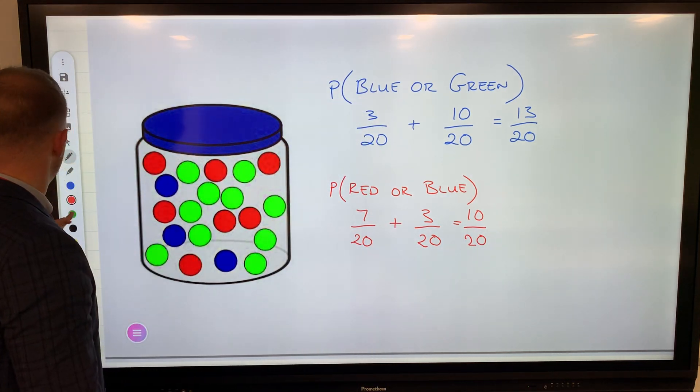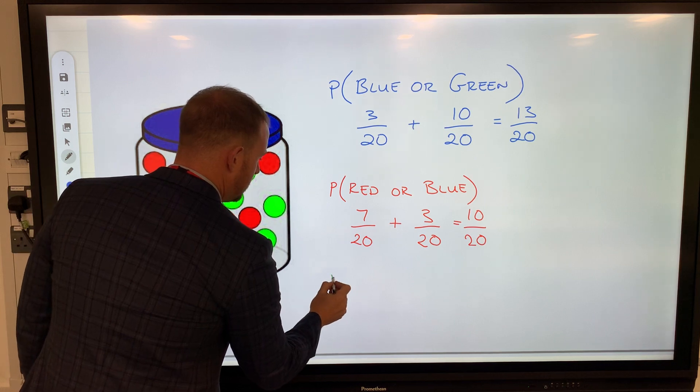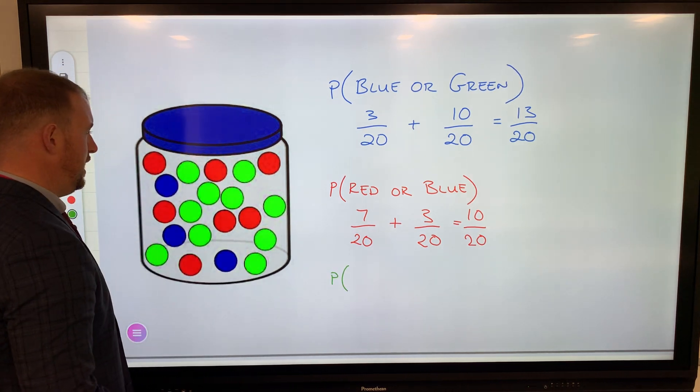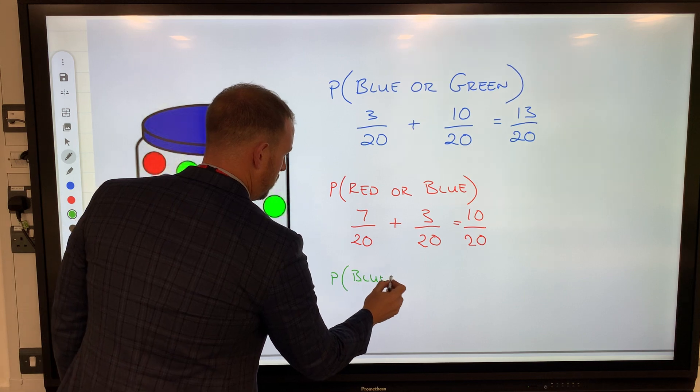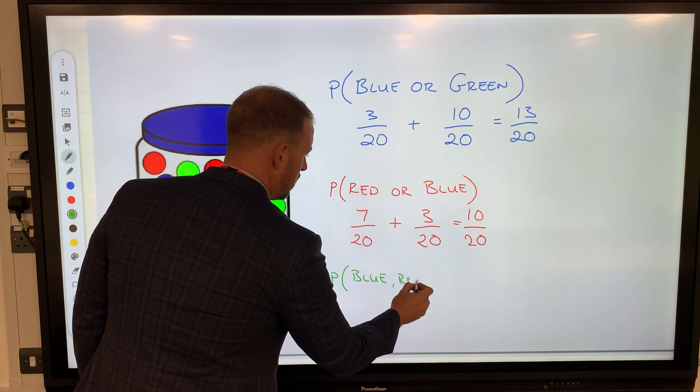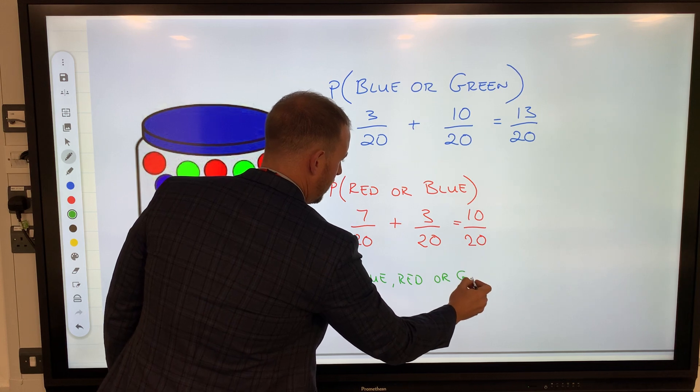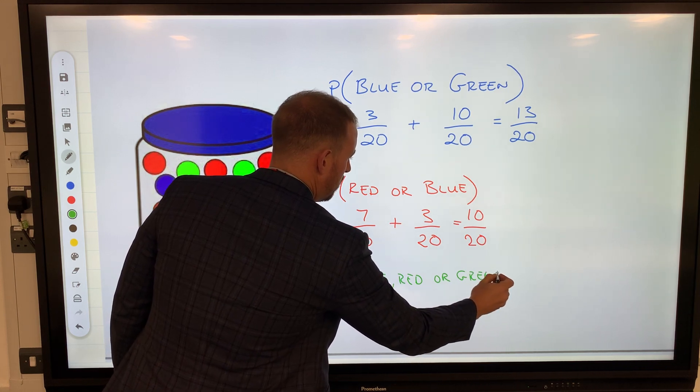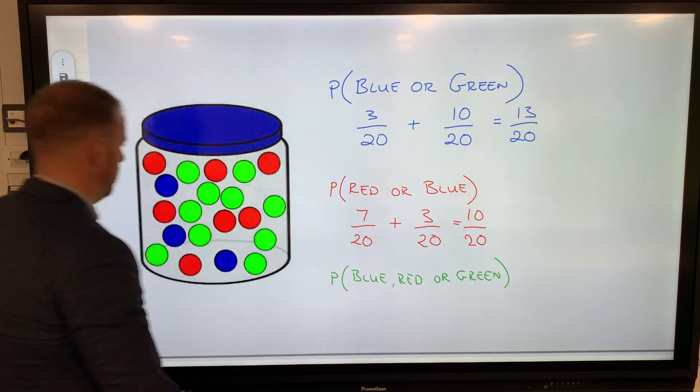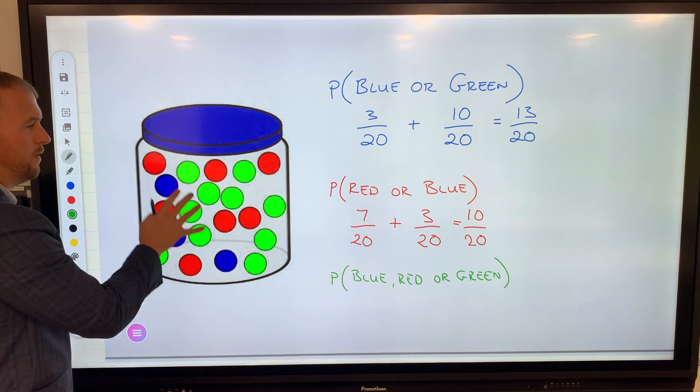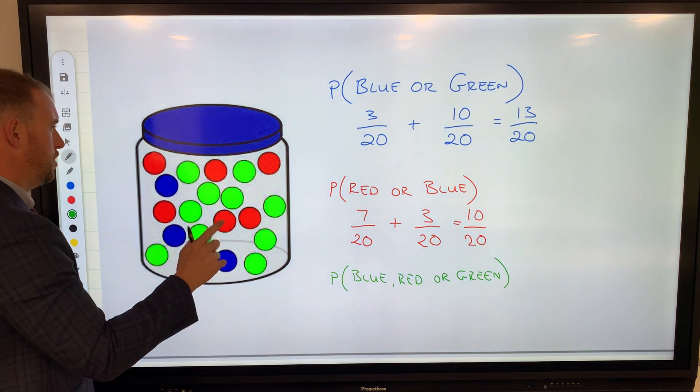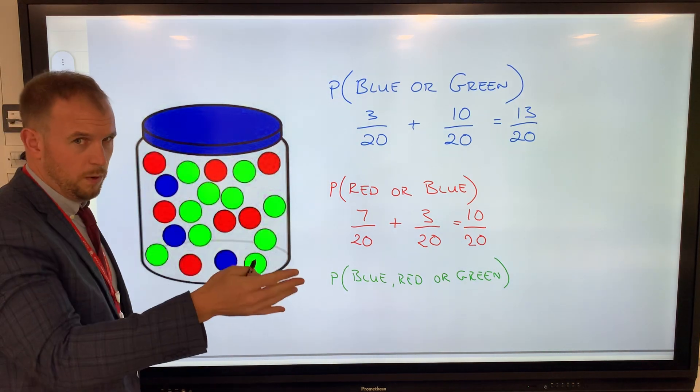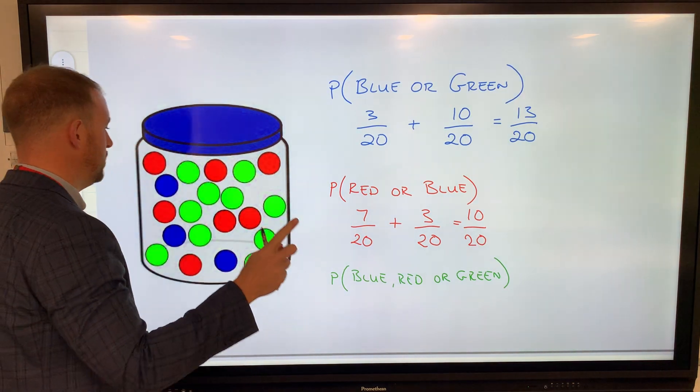Follow that pattern: the probability of selecting either blue, red, or green. Well, they're all the colors we've got there—there are no other possible events. So we know what it should equal, but let's just prove it to make sure it does.